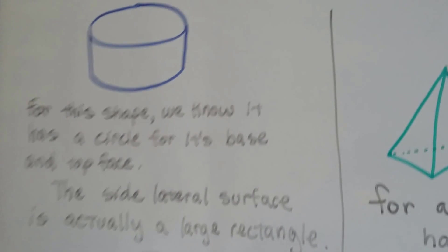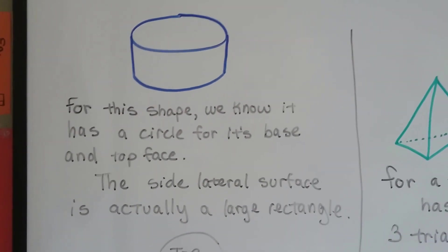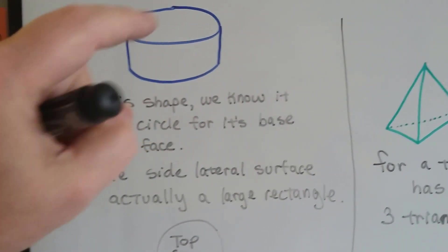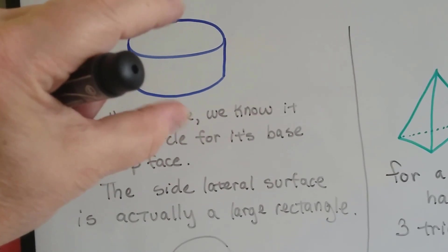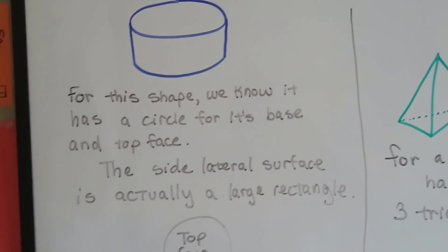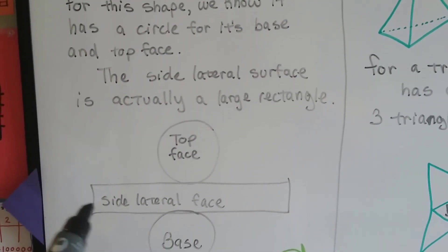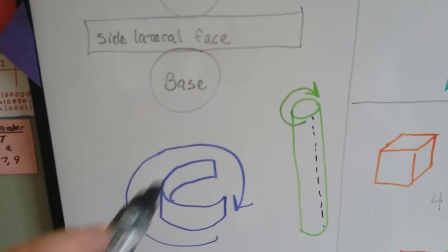For this shape, it kind of looks like a cake, doesn't it? Like a birthday cake or maybe even a hat box from the olden days. You can see that it's got a circular base that it's sitting on, and it's got a circle for a base on the top, like this. Base 1 and base 2. And the lateral surface is actually a large rectangle that's wrapping around.